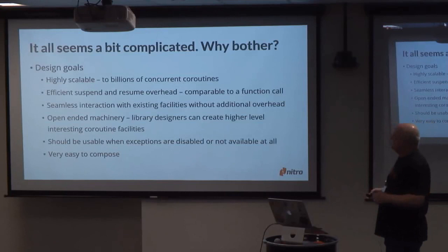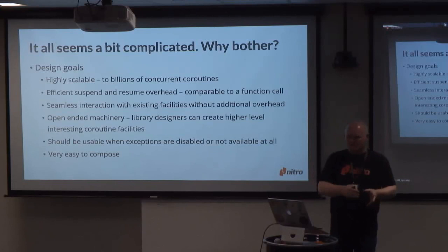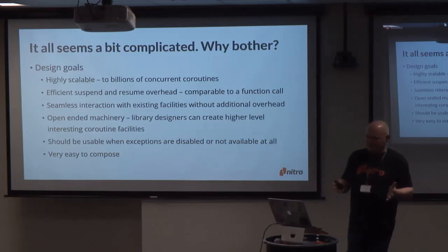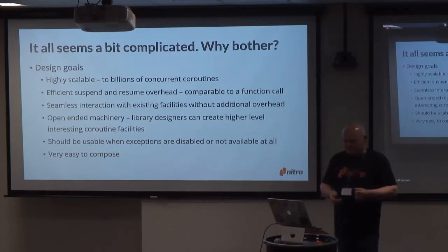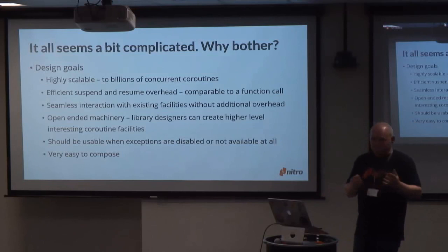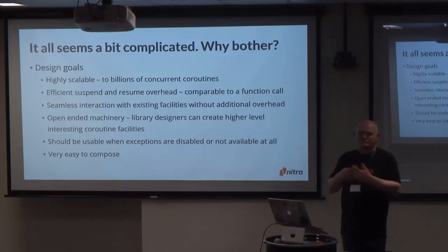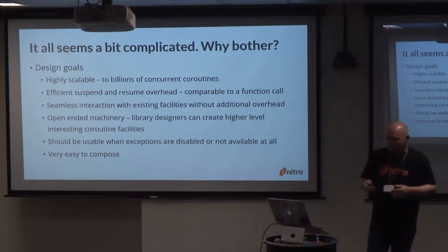One question I asked myself when I started this: it's all a bit complicated — why do we bother? One of the things that makes coroutines very valuable is that they are really highly scalable. They're so lightweight that it's easy to have billions of them, giving a level of concurrency that's really hard to achieve any other way. There's very efficient suspend and resume overhead — not that far from a regular function call. Seamless interaction with existing facilities without any additional overhead. It is just a function call, or just a regular object. It's open-ended machinery: library designers can create higher-level objects just like our generator. And whether you have exceptions enabled or not isn't germane — they're very easy to compose.